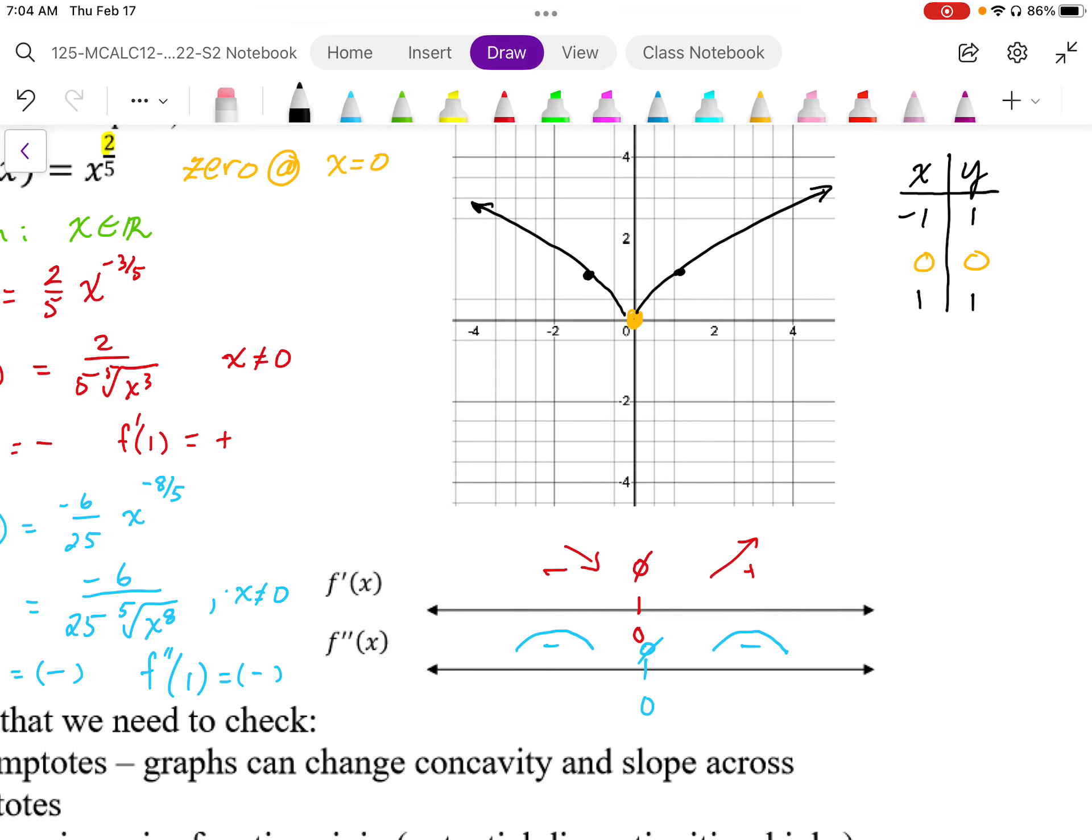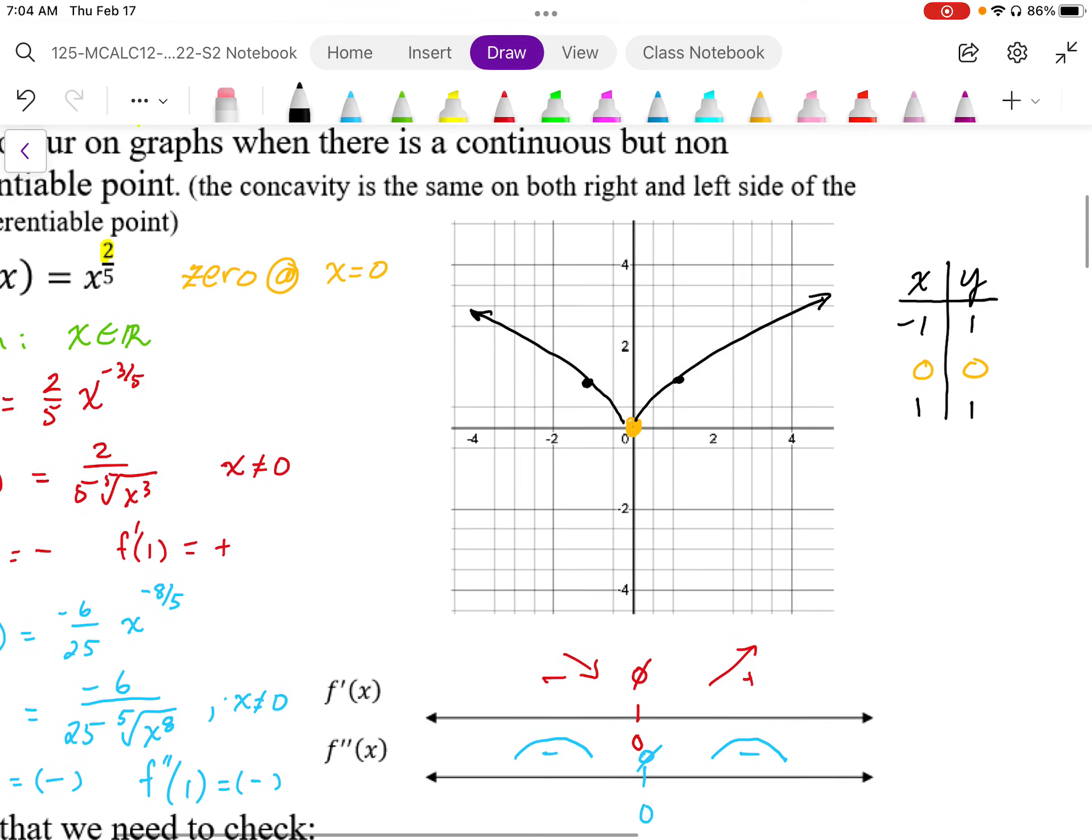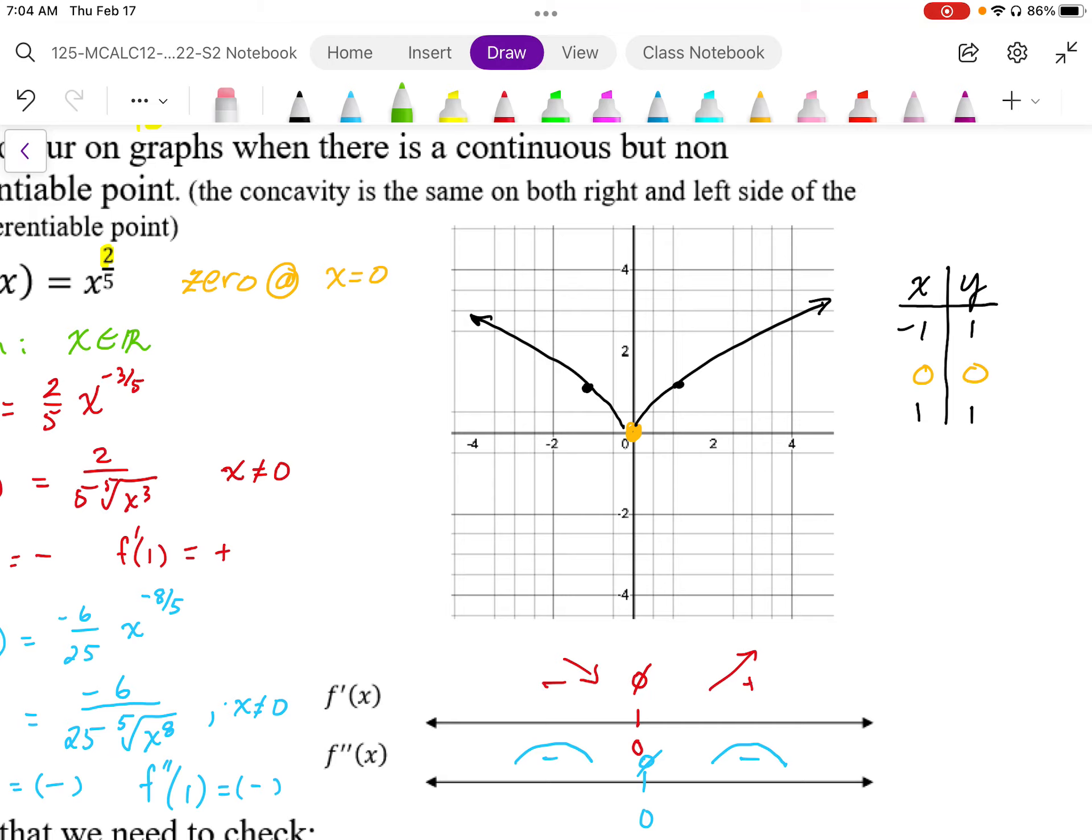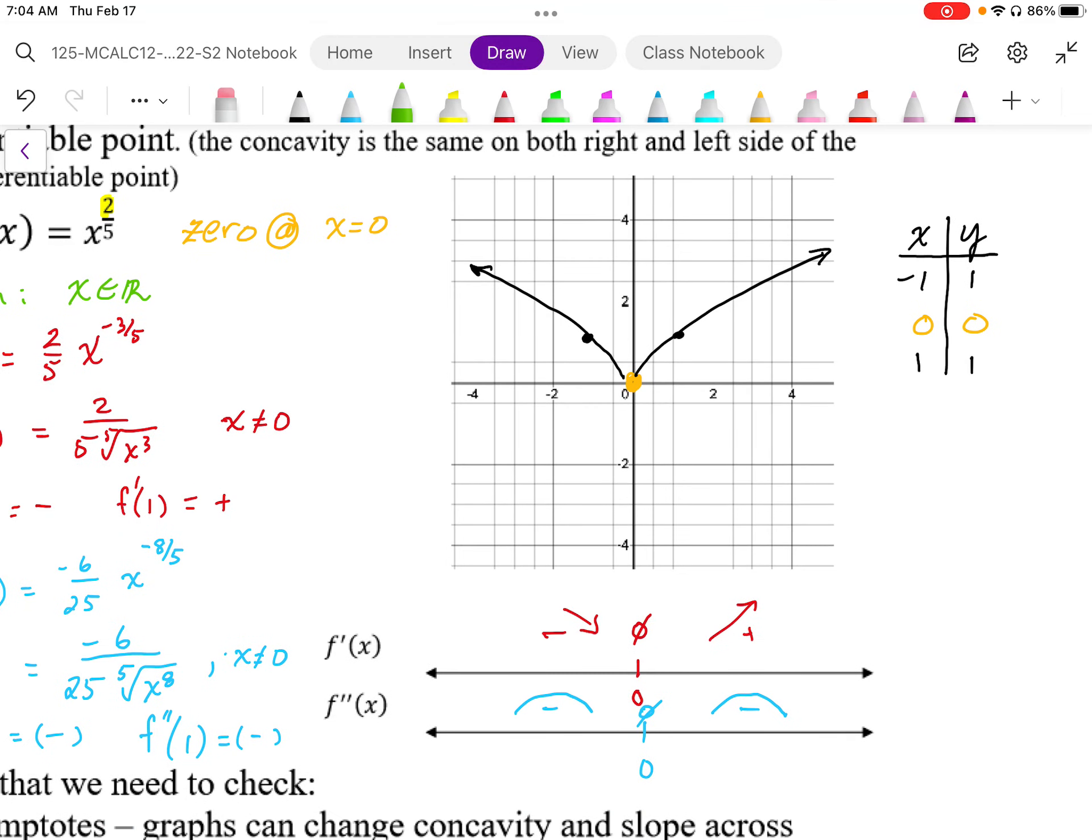And this is going to infinity, and we could do a limit to justify that. This is being more formal, but limit as x goes to positive infinity of x to the power 2 fifths, we know that's going to be infinite. And as we go to negative infinity, same thing. Because that power 2, it's going to make it positive as well. So it's going to shoot off to the right and the left out to infinity.